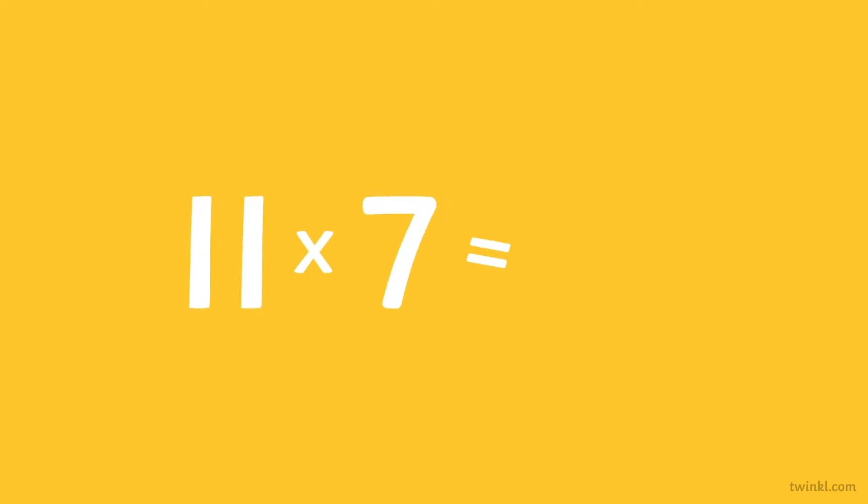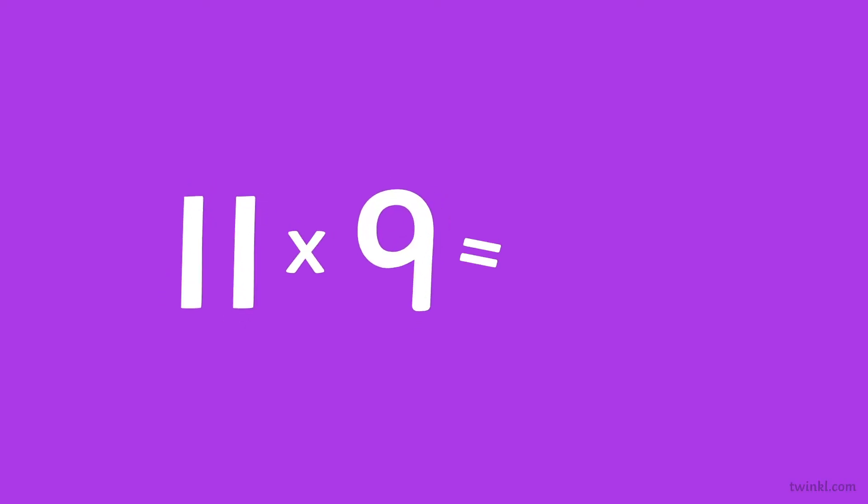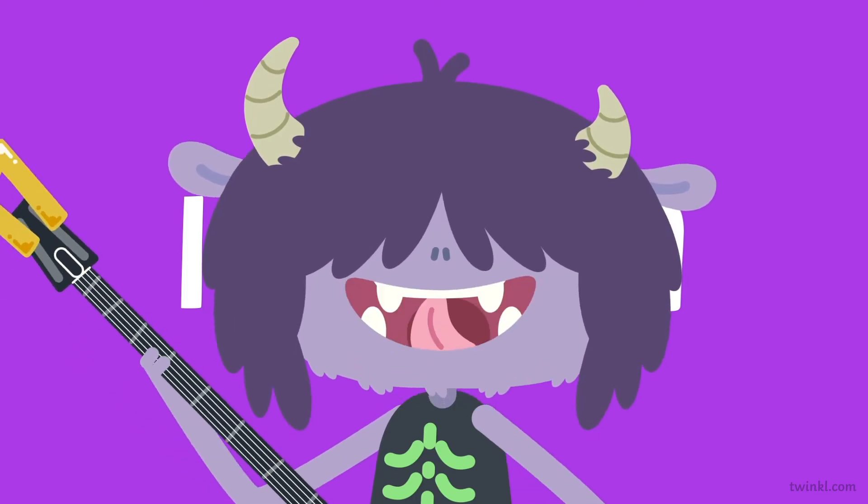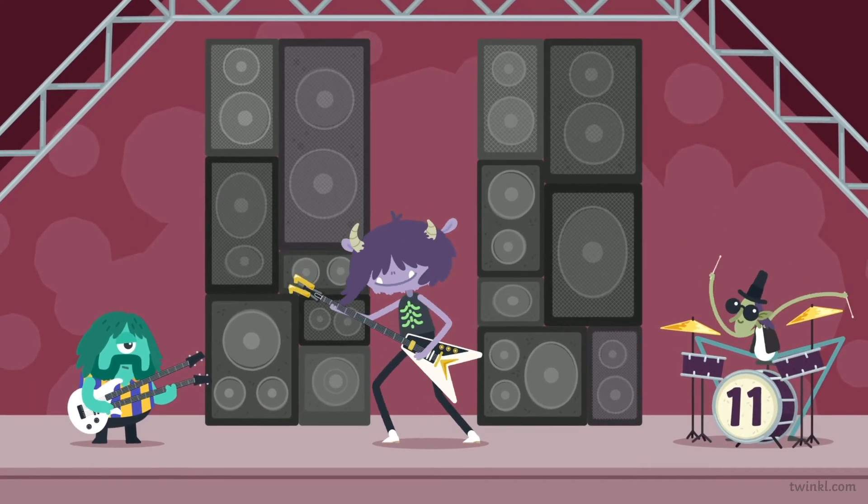Let's take it on. Eleven times six is sixty-six. Eleven times seven is seventy-seven. Eleven times eight is eighty-eight. Eleven times nine is ninety-nine. This is where things start to change, but don't you worry.